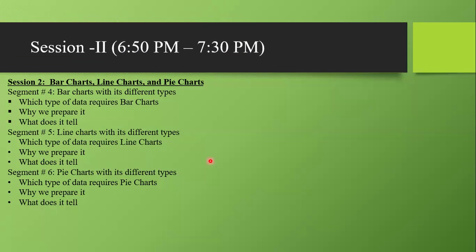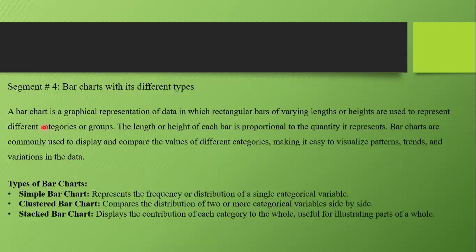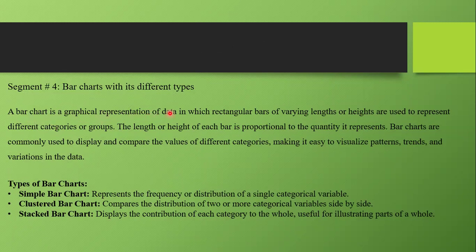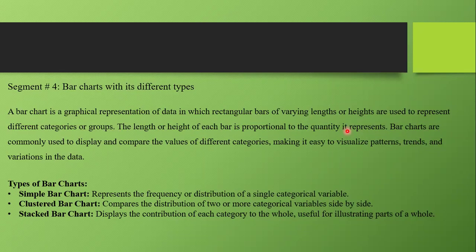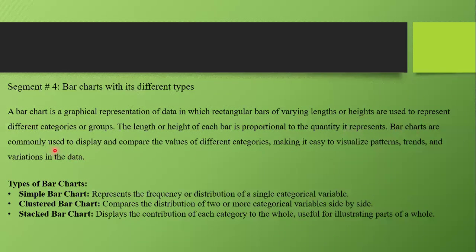Let's start with bar charts. A bar chart is a graphical representation of data in which rectangular bars of varying lengths or heights represent different categories or groups. The length or height of each bar is proportional to the quantity it represents. If the quantity is high, the bar will be longer; if low, the bar will be shorter. Bar charts are commonly used to display and compare values of different categories, making it easy to visualize patterns, trends, and variations in the data.